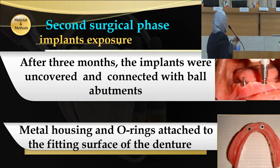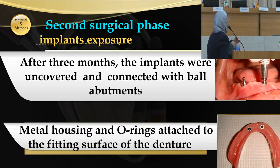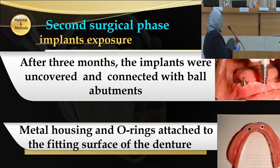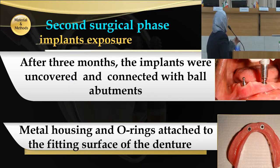In the second surgical phase, after three months, the implants were uncovered and connected with ball abutments, as shown in the figure. The metal housing and O-ring were attached to the fitting surface of the implant overdenture.